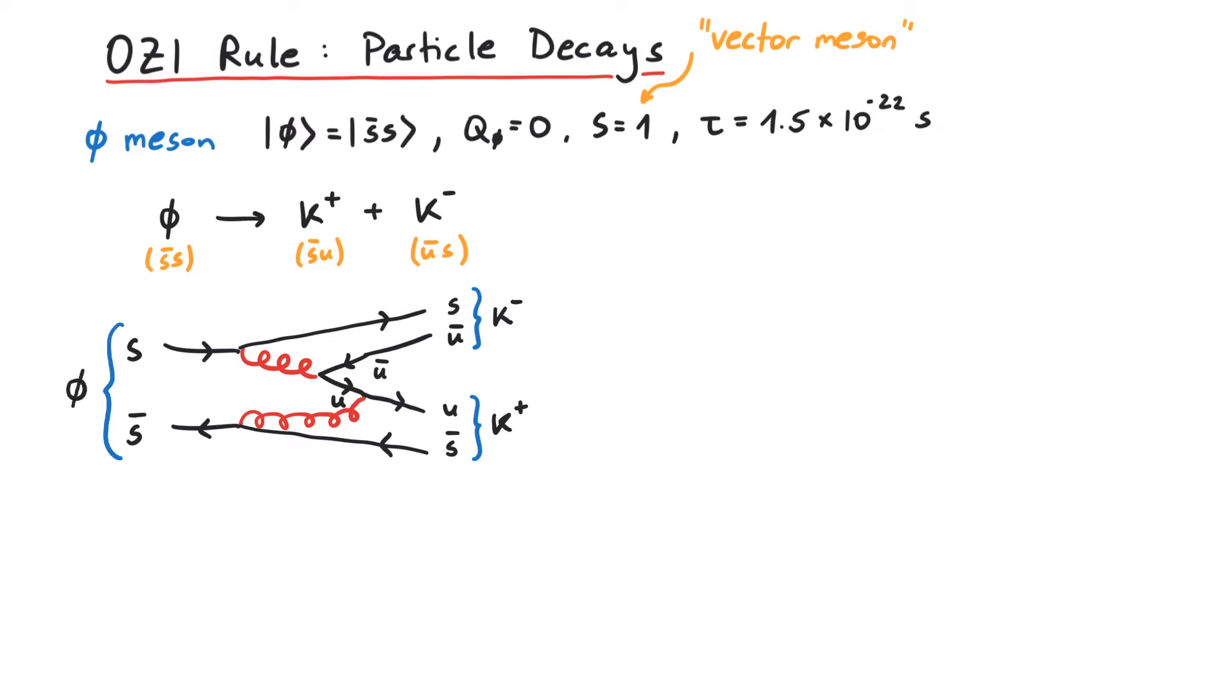Another possibility is the decay into three pions: a pi plus, a pi minus, and a pi zero. If we look at the quark content, we see that the strange quarks are annihilated somehow, and we create some up-anti-up and down-anti-down pairs.